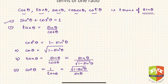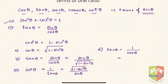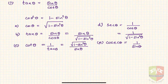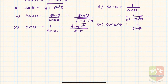What about secant theta? Secant theta is 1 upon cos theta, so it can be written as 1 upon the square root of 1 minus sin squared theta. And finally, cosecant theta is 1 upon sin theta. In this way we could express all five other trigonometric ratios in terms of sin theta.